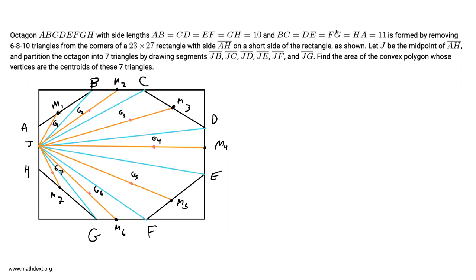Okay, so I've gone ahead and drawn this diagram, but I've also added a lot of stuff. First of all, I've added the segments connecting JB, JC, JD, JE, JF, and JG. However, I've also added the segments joining J to the midpoints of the other 7 sides of this octagon. And what I'm going to do is I'm going to claim that the area of this polygon with the centroids as the vertices is 4/9 times the area of the polygon formed by these midpoints. And here's why.